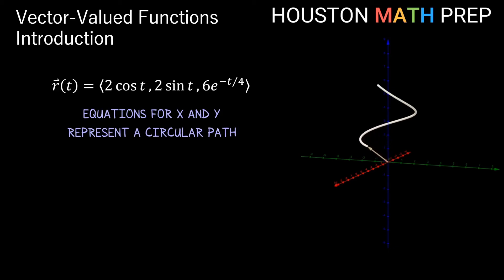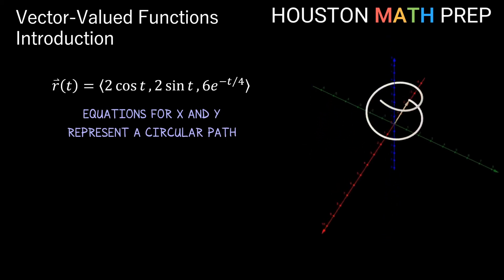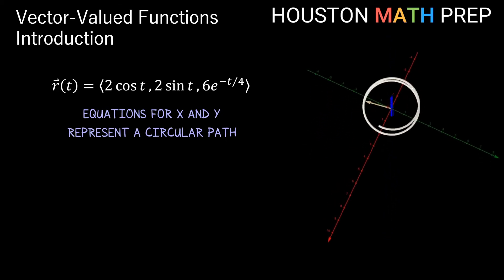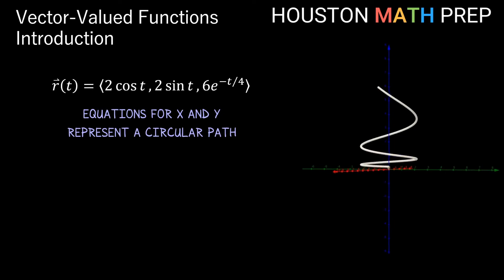As we look down at the xy plane, we have a circle of radius 2, but our z value, this exponential function with the negative coefficient, this represents the idea of exponential decay.